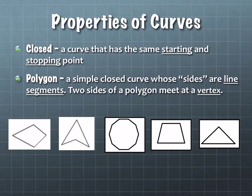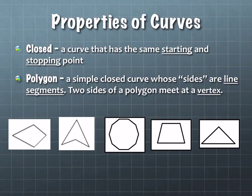A polygon is a simple closed curve whose sides are line segments. Two sides of a polygon meet at what we call a vertex. A circle would not be a polygon — it doesn't even have sides the way that we describe it, no edges.